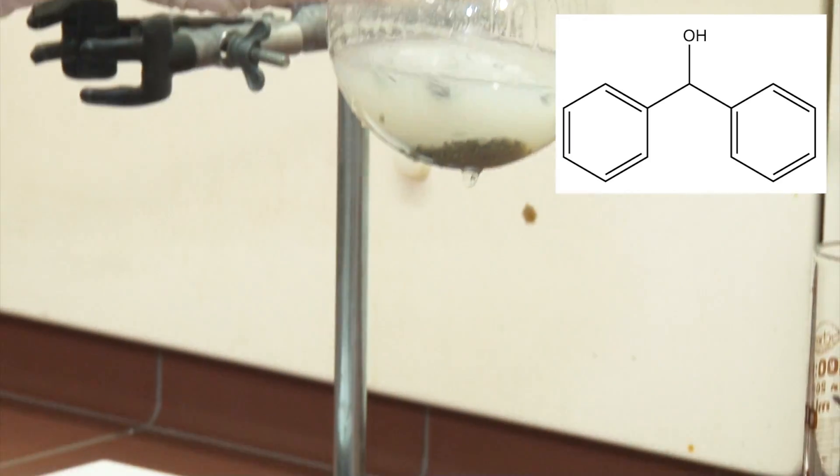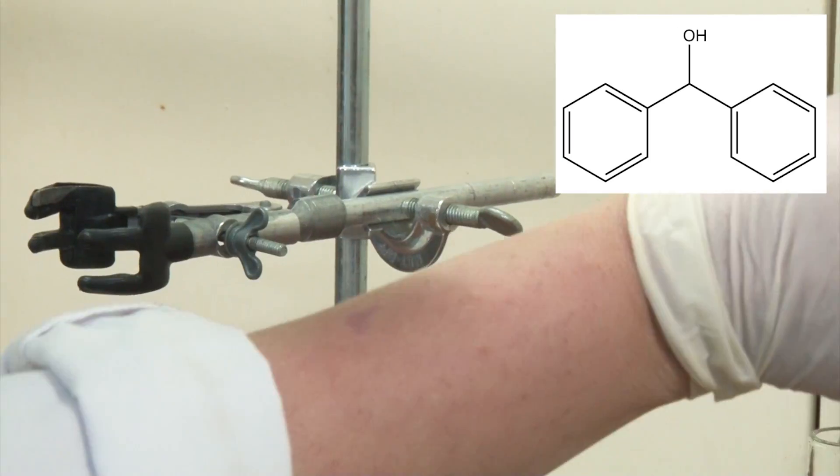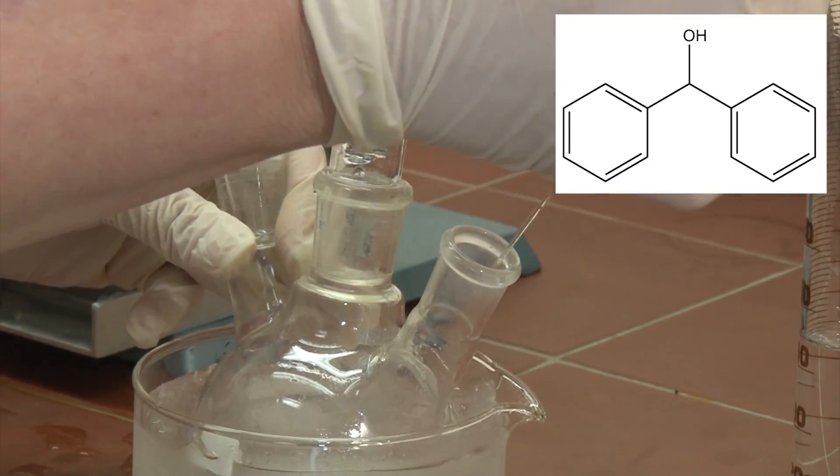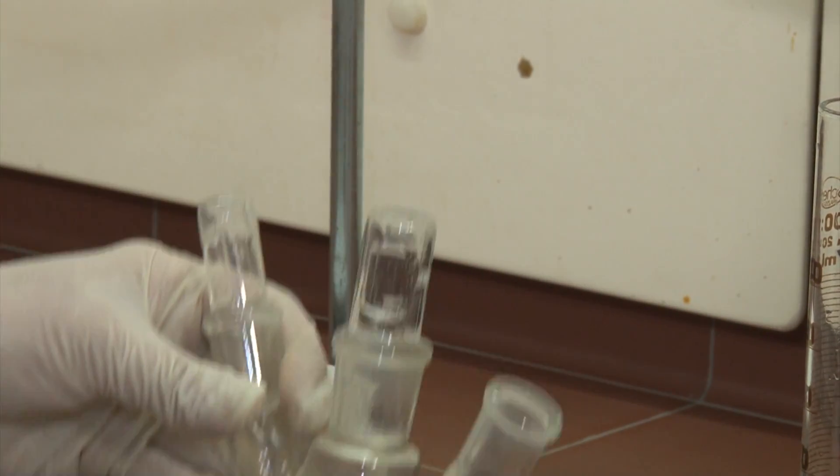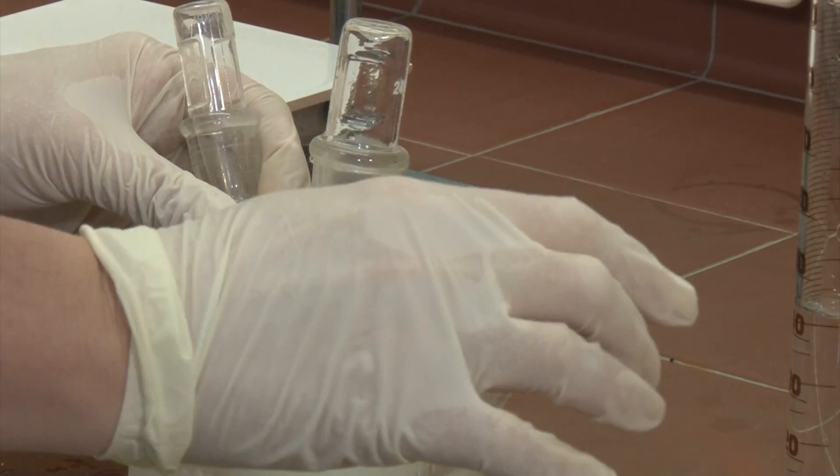If you've got a lot of magnesium left in the bottom of your flask, it will react with the acid to form hydrogen gas. Overall, the process of adding the acid should take you about 20 minutes.